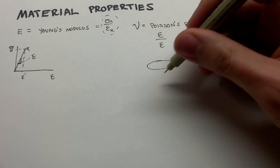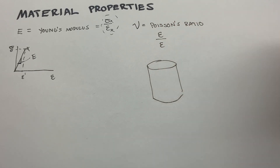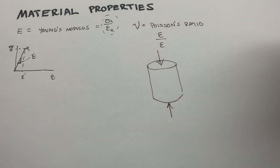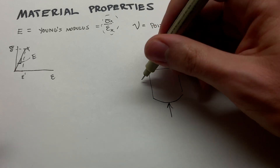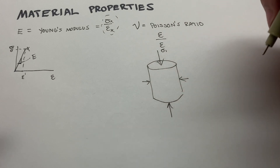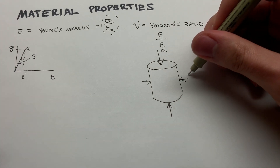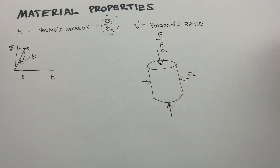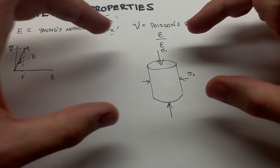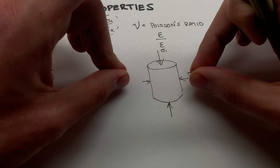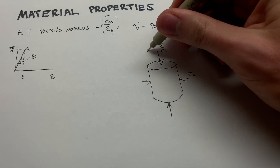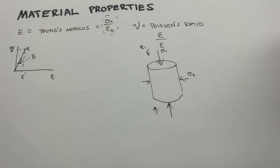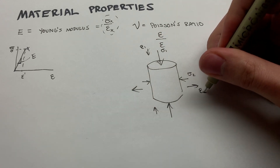If we look at a classic cylindrical rock sample — limestone, sandstone, pick your favorite — and we put it in compression, we have a big stress in the axial direction, sigma 1, and a smaller confining stress in the radial direction all around it, sigma 2. The rock will get compressed axially, giving epsilon 1, and expand radially, giving epsilon 2.